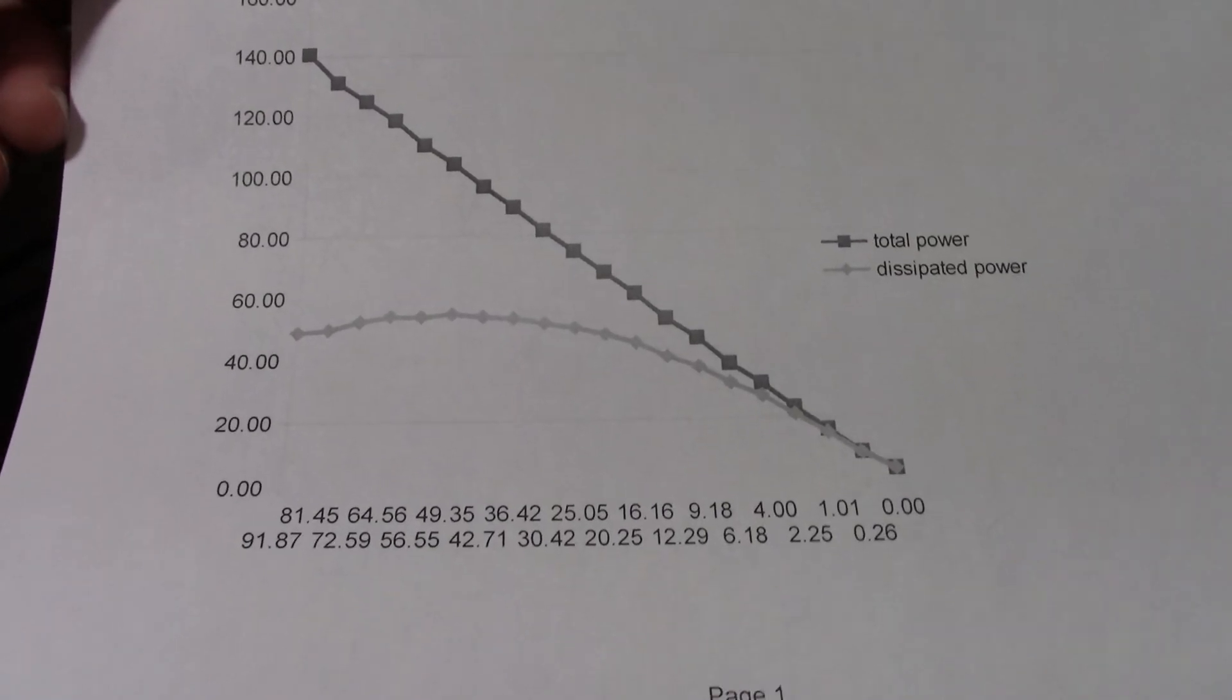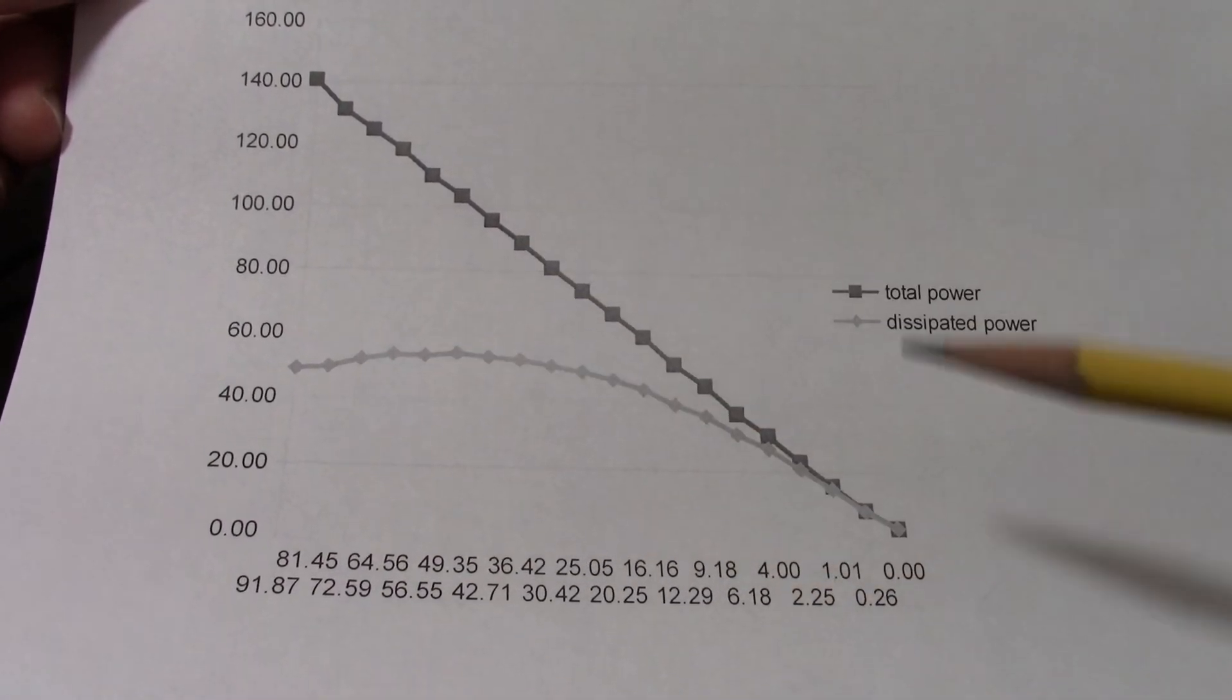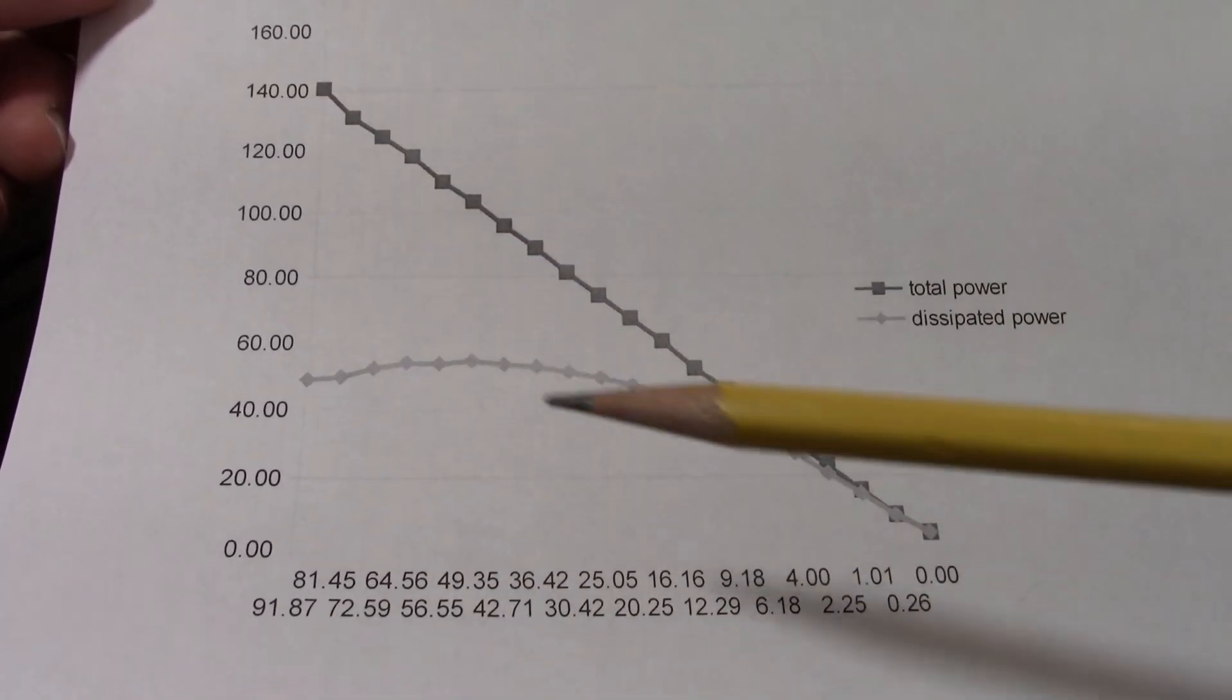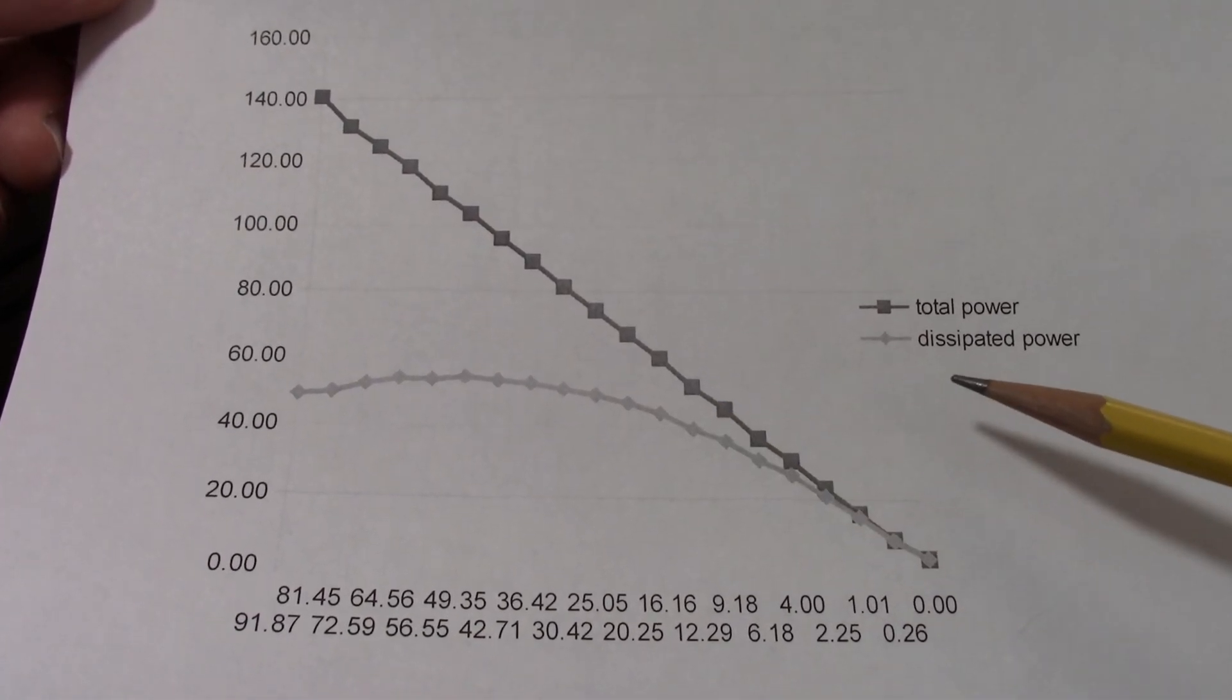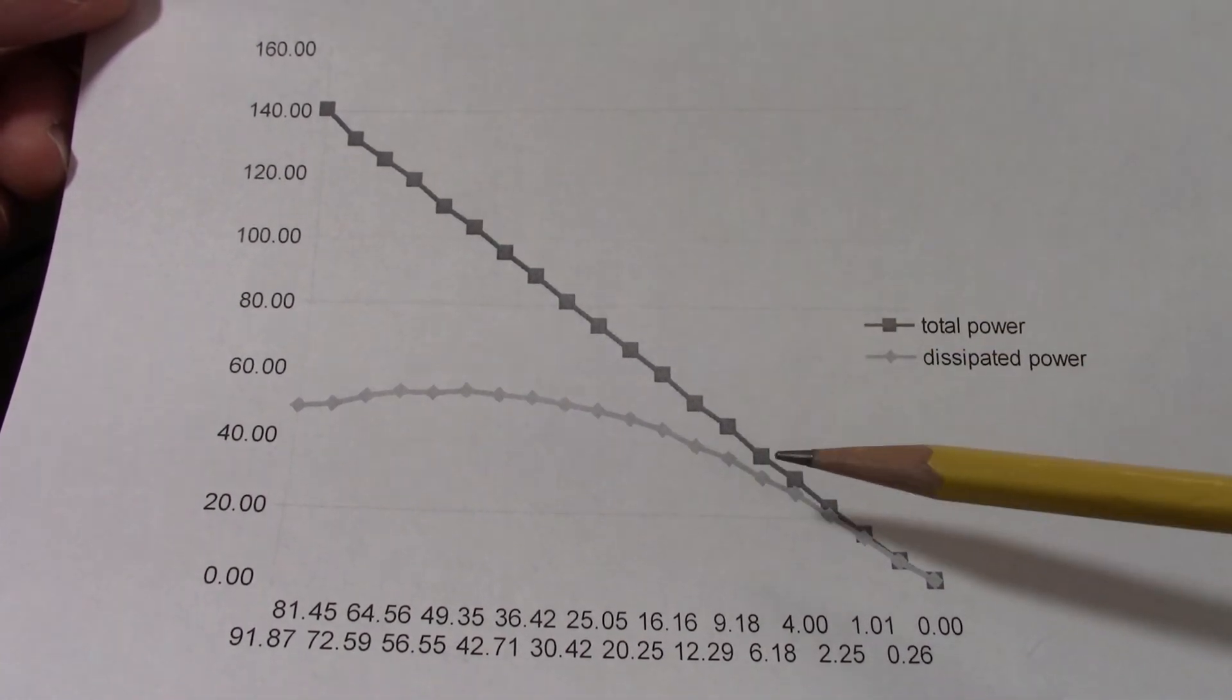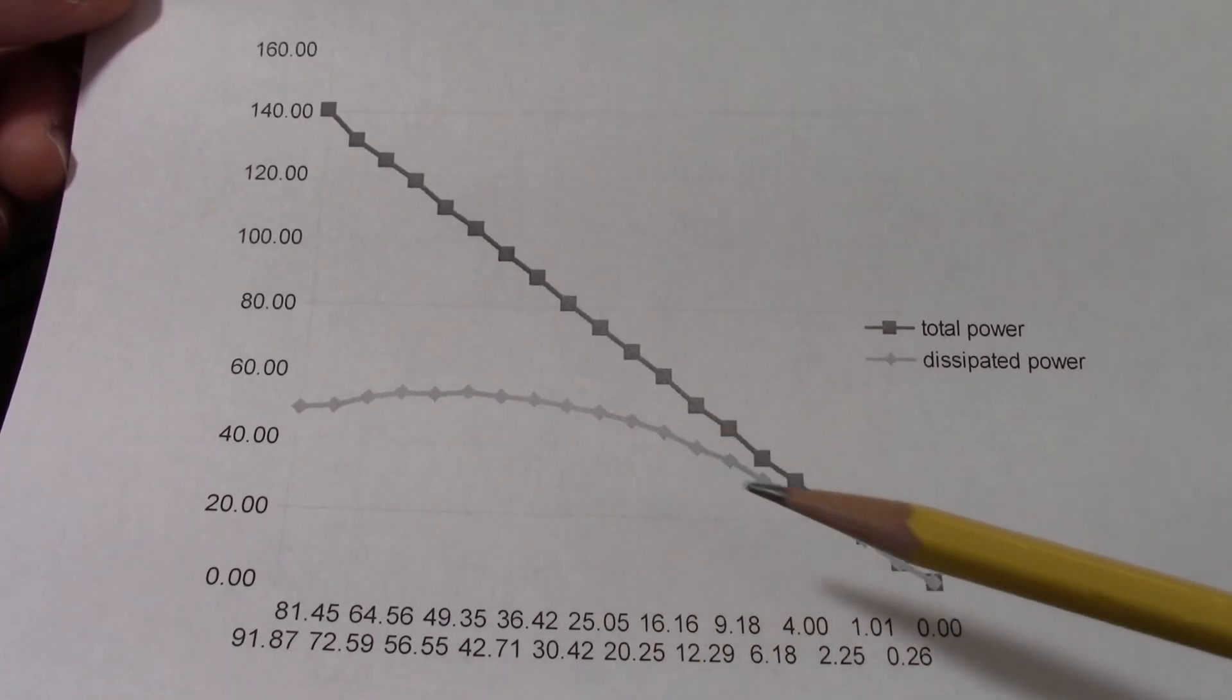So here's the graph - x-axis is the output power. Now I started measuring high and went low, that's why it's kind of flip-flopped but same difference, it doesn't really matter. Y-axis is just power. So you can see here with this line, the lighter line is the dissipated power, this line is the total power. So it pretty much goes straight up, very slight wiggles due to measurement errors but pretty happy with the results, fairly curved linear line there.